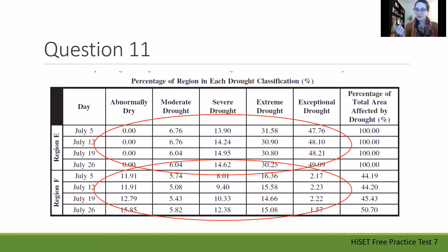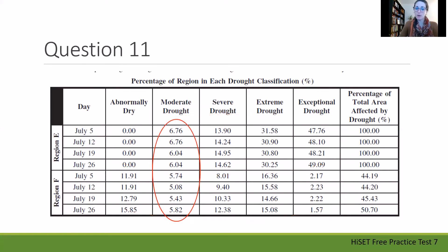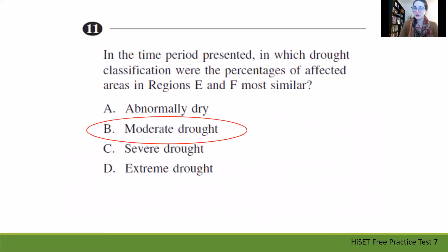For extreme drought, I see 31, 30, 30, 30 in region E and then 16, 15, 14, 15 in region F. Looking at those disparities and checking exceptional drought as well, I want to figure out which category has the numbers closest together. I'm definitely drawn to moderate drought — fives and sixes are very close together, much different from 0 to 11, 8 to 14, or 16 to 30. Those are big gaps. Moderate drought has a very reasonable and similar amount, so that's the answer.